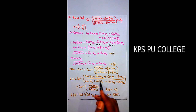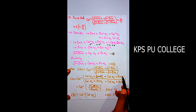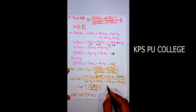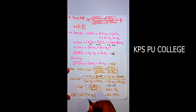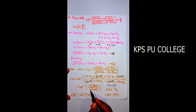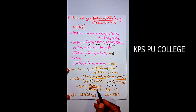In the numerator, the sin(x/2) terms cancel and we get 2cos(x/2). In the denominator, the cos(x/2) terms cancel and we get 2sin(x/2). The 2 and 2 cancel, giving cos(x/2) / sin(x/2), which is cot(x/2).